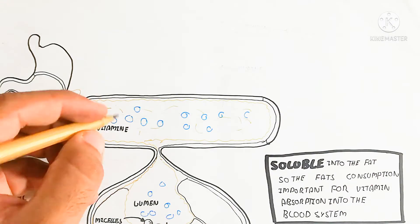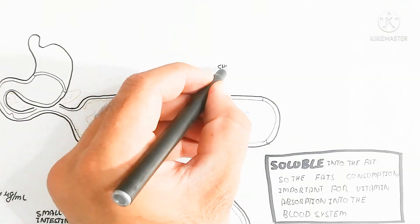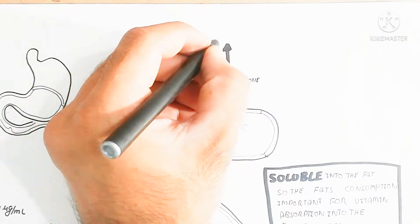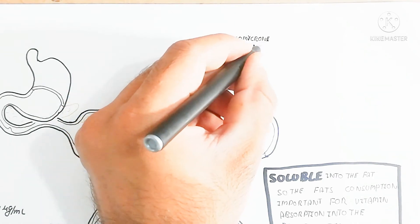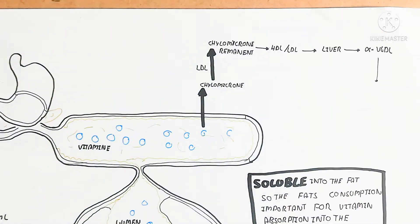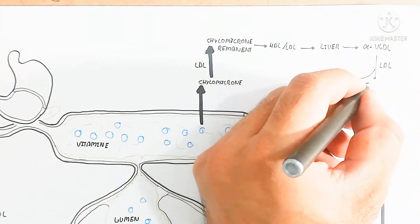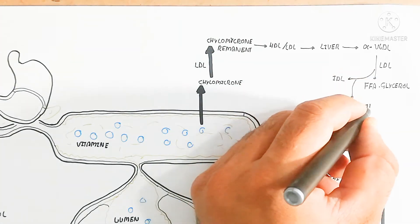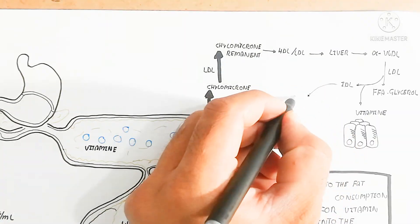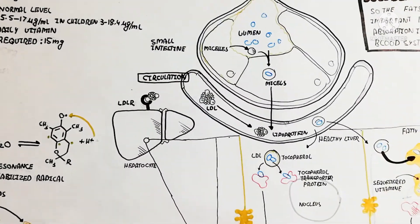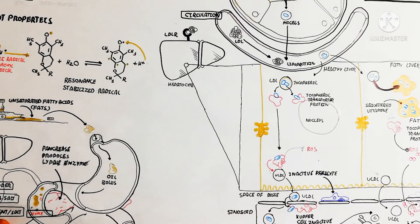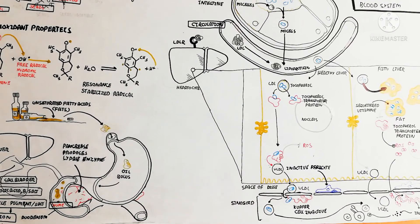Fat consumption is important for vitamin E absorption into the bloodstream. In summary, chylomicrons enter the blood circulatory system to become LDL, and chylomicron remnants go into HDL and LDL to the liver to become alpha-tocopherol-containing VLDL. LDL, free fatty acids, and glycerol then transport vitamin E to tissues, with LDL converting to deliver vitamin E to peripheral tissues.